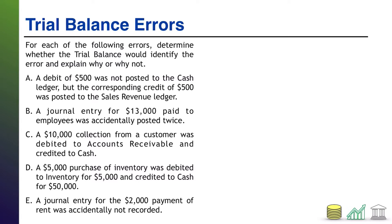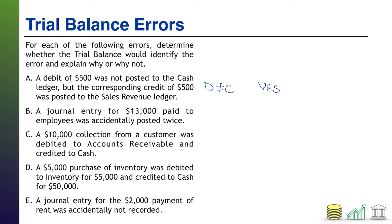Welcome back. We'll start with Error A. A debit of $500 was not posted to the cash ledger, but the corresponding credit of $500 was posted to the sales revenue ledger. The debit didn't make it to the ledger, so it won't show up on the trial balance, but the credit did. This throws debits and credits out of balance, so yes, the trial balance will capture it. That's the running theme: if an error throws debits and credits out of balance, the trial balance catches it; if not, it won't.